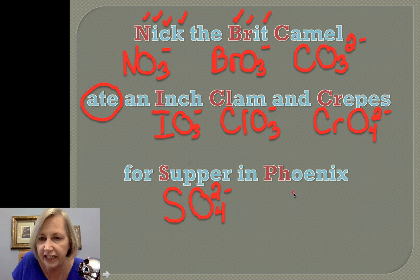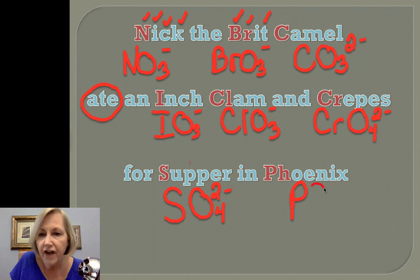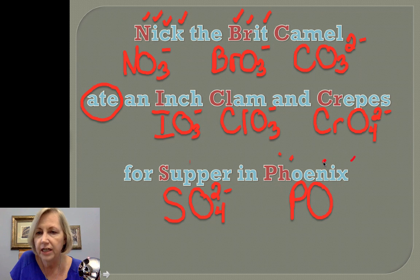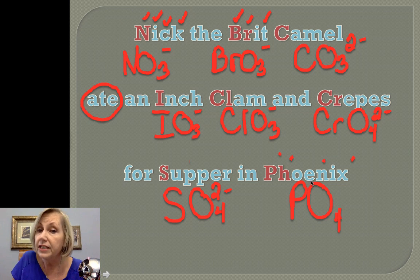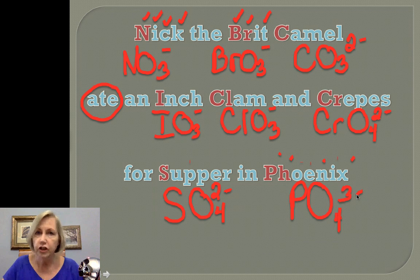And finally, 'in Phoenix.' If you're in high school, think of Phoenix from English class; if not, think of Phoenix the town. So we've got phosphate. We've got four consonants — one, two, three, four — so four oxygens. This time note that we have one, two, three vowels, and it's the one with the three negative charge.